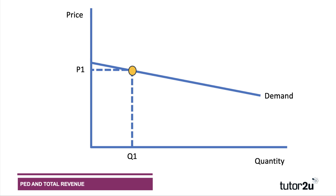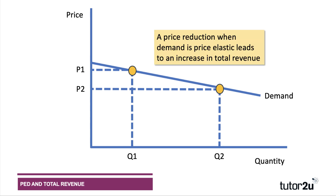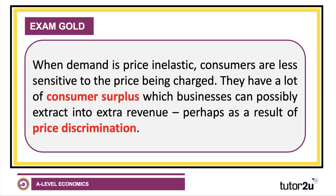We start at initial price and quantity P1 and Q1, and revenue is shown by that rectangle. Lowering the price leads to a substantial expansion in demand because demand is price-sensitive, so you're now selling Q2 at price P2. A decrease in price when elasticity is more than one leads to higher total revenue. You're getting less per unit, but selling a much greater quantity — the quantity effect outweighs the price effect.